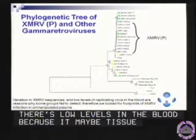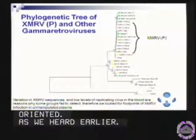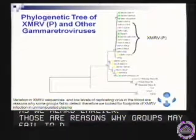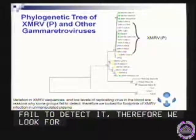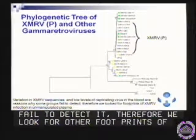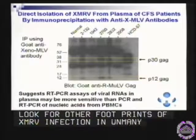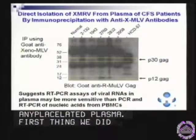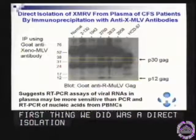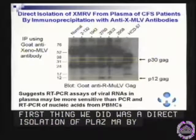Those are some of the reasons why groups may fail to detect it. Therefore, we look for other footprints of XMRV infection in unmanipulated plasma. The first thing we did was a direct isolation of plasma by immune precipitation using a goat anti-Xeno MLV antibody.